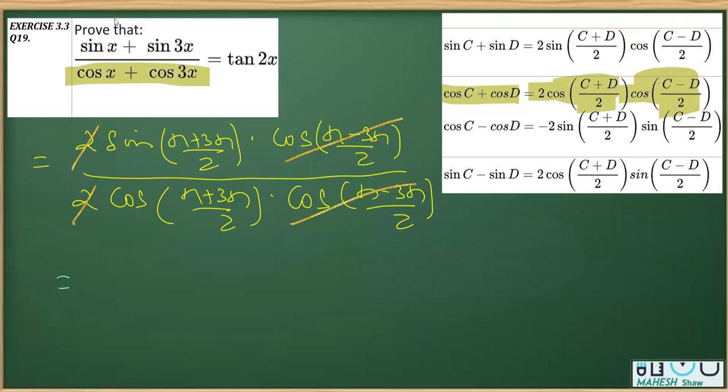This is x plus 3x is 4x upon 2, that is 2x. And similarly x plus 3x is 4x divided by 2, that is cos 2x. As you know sine over cos is tan, so this is equal to tan 2x, and that is equal to the RHS. That's what we have to prove in this question.